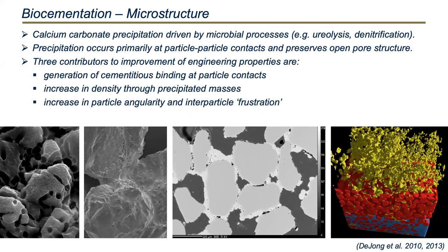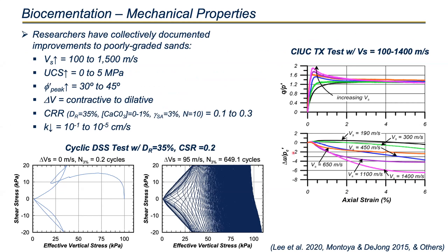At a particle scale, the improvement can be conceptualized by generating rigid cementation between particles. This can be realized as a cemented bond increasing the cohesive intercept — as Brina Montoya and others have shown — or it can be captured as an increase in peak friction of the material. Depending on how you interpret and plot these results, you can see that peak strength increases substantially as does stiffness. The critical state or constant volume strength changes less.